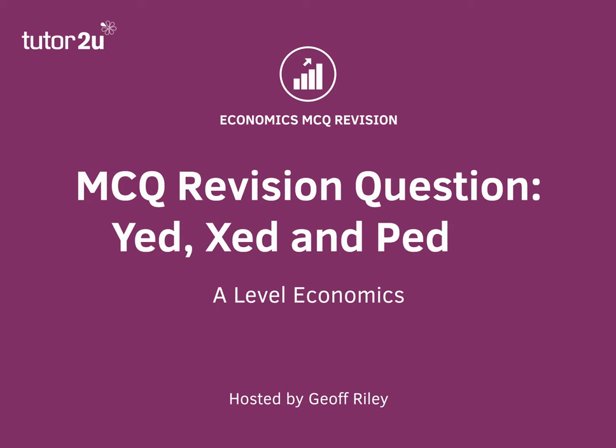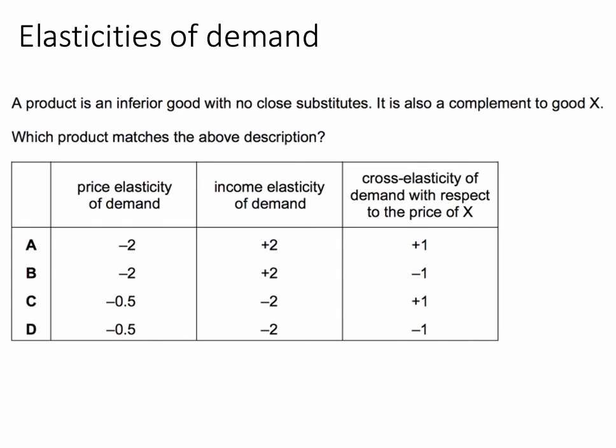Welcome back. Here's a question which tests your understanding of three different elasticities of demand. A product is described as an inferior good with no close substitutes. We're also told it's a complement to Good X. Which product — A, B, C, or D — matches the above description?